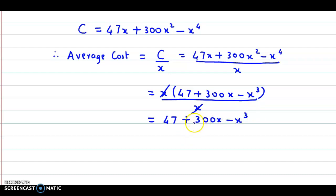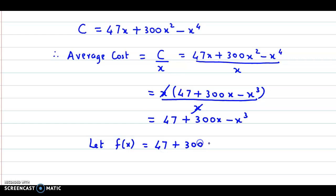This is the average cost function. Suppose we give it the name f of x. Let the average cost be f of x, which is equal to 47 plus 300x minus x cube.